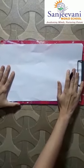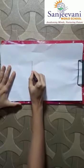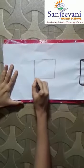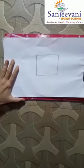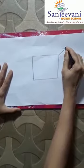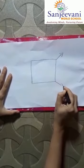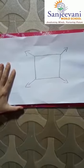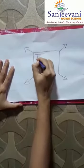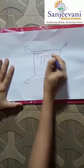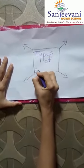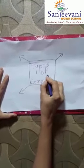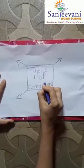First of all, at the center of the page — see how I have kept the A4 size sheet sideways — you will draw a simple square. Then at the four corners of the square you will draw arrows. Now I will write here: Types of Computers. This is our topic that we are going to cover in the drawing and coloring activity.